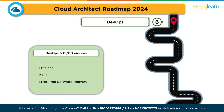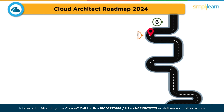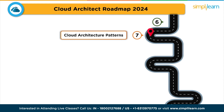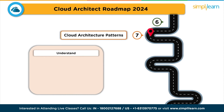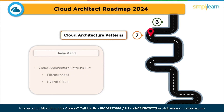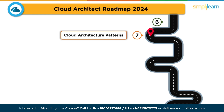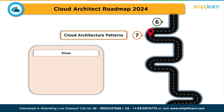The last and seventh step is cloud architecture patterns. Different cloud architecture patterns should be understood, such as microservices, serverless, and hybrid clouds. Know when to use each pattern and how to design systems for scalability, performance, and cost-effectiveness. This is the complete roadmap you need to follow to become a successful cloud architect in 2024.